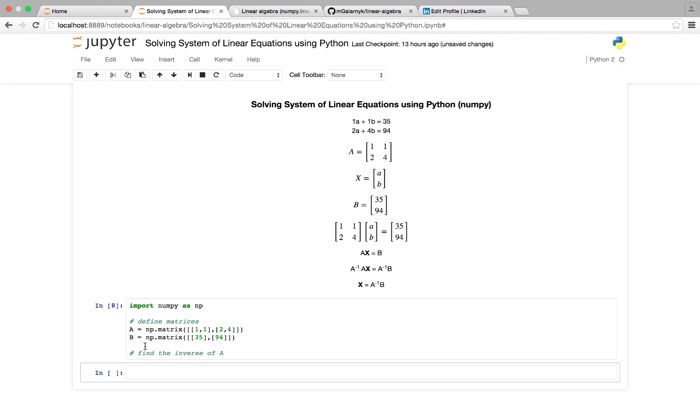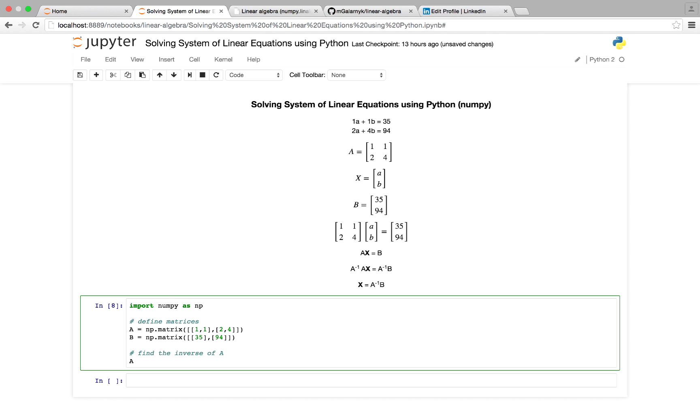A underscore inverse is equal to np. The dot linalg is just a linear algebra part of the numpy library, which has a lot of useful methods, such as finding the inverse, find the determinant, etc.